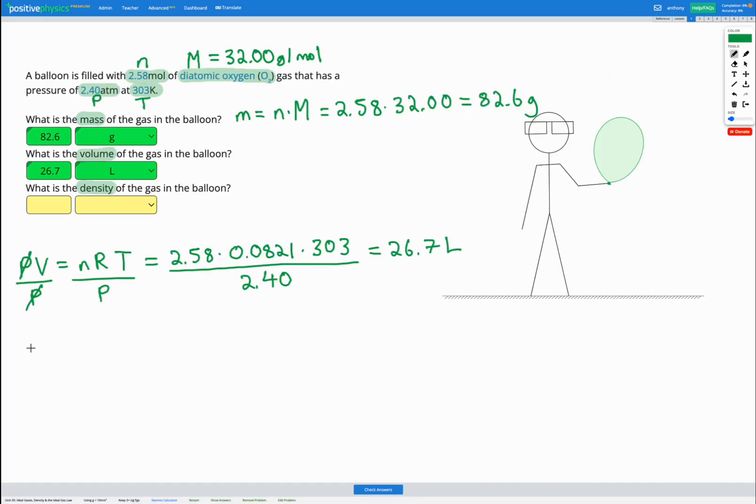So for our last step, density equals mass divided by volume. We calculated our mass in the first part. We got 82.6 grams. Divided by our volume, which we calculated in the second part, we got 26.7 liters. That's going to give us a density of 3.09 grams per liter. And let's just check we got that correct. 3.09 grams per liter. Awesome.